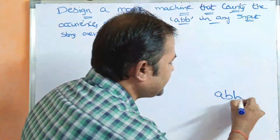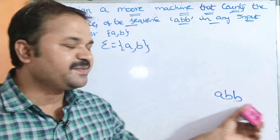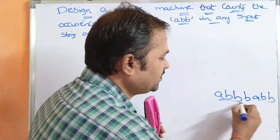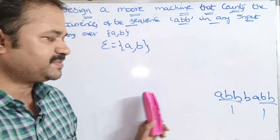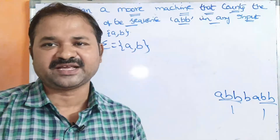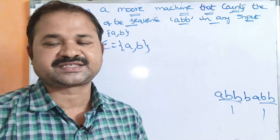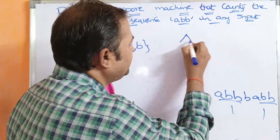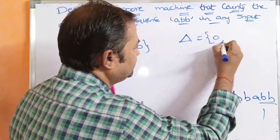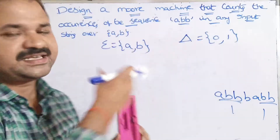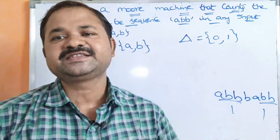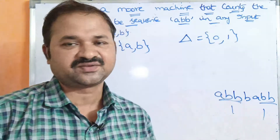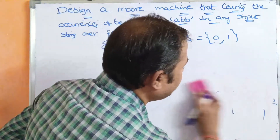If we have the sequence ABB, then ABB occurs one time. If we have ABBABB, then ABB occurs two times. So the output alphabet contains two symbols: delta equals {0, 1}. Zero means that the sequence is not found, and 1 means that the sequence is found one time. We simply add these values to count total occurrences.